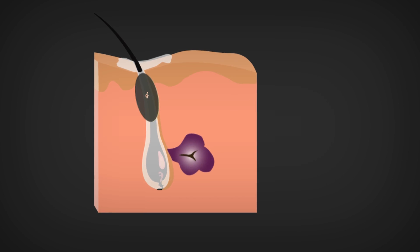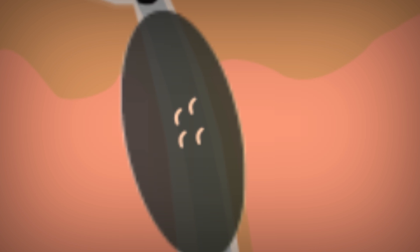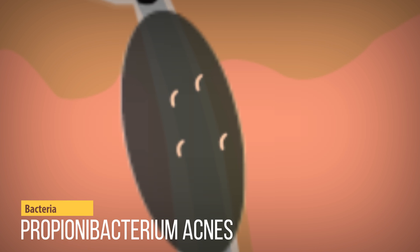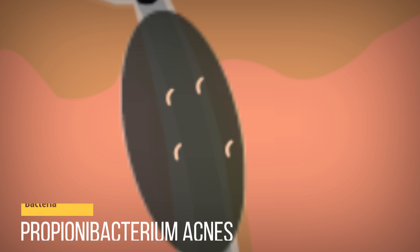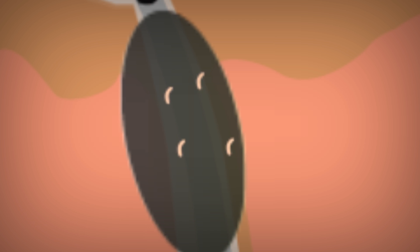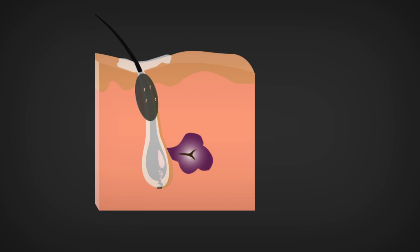We all know too much lipid is bad for our health, but the bacteria Propionibacterium acnes doesn't seem to know that. It grows rapidly in the lipid-rich comedones. The bacteria initiates an inflammatory response and further expands the comedones.